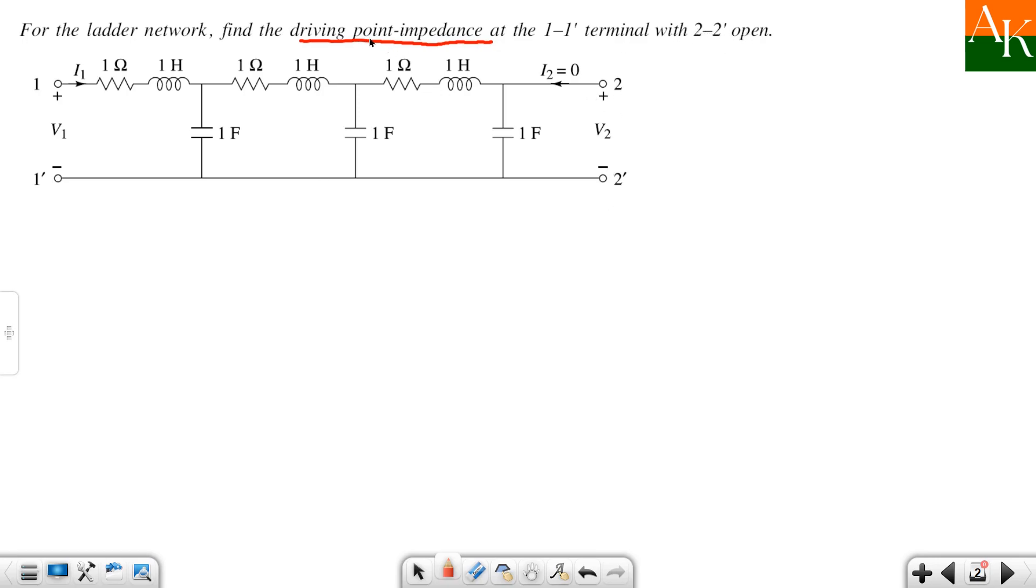They are asking you to calculate driving point impedance z11. Here I have to write down suffix as z11, and z11 impedance is nothing but voltage by current, so v1 by i1. You have to find v1 by i1 with terminal 2-2 dash open. This means the second port is open and i2 is equal to 0.